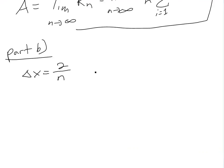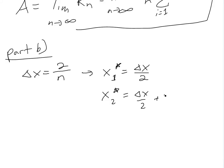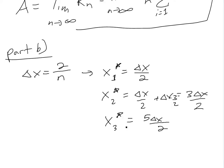Delta x stays the same, because it's just going to be delta x shifted. The only difference is our x1, x2, x3 values are going to be different. Delta x is still 2 over n. Now our x star values are: x1 star equals delta x divided by 2, because it's in between. Then x2 star equals delta x over 2 plus delta x, which equals 3 delta x over 2. And x3 star is going to be 5 delta x over 2, because we just keep adding delta x.